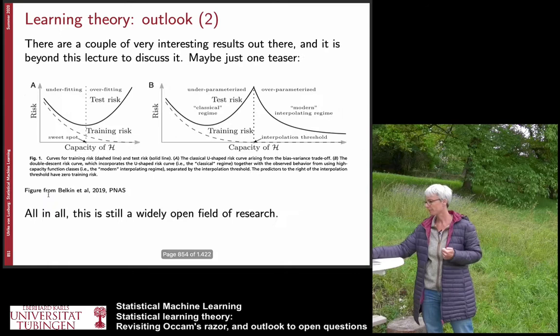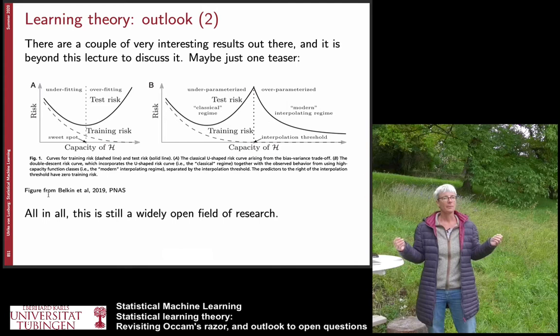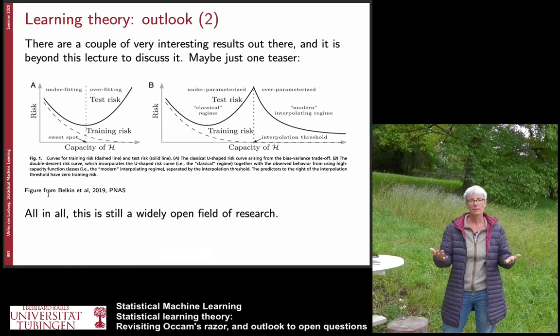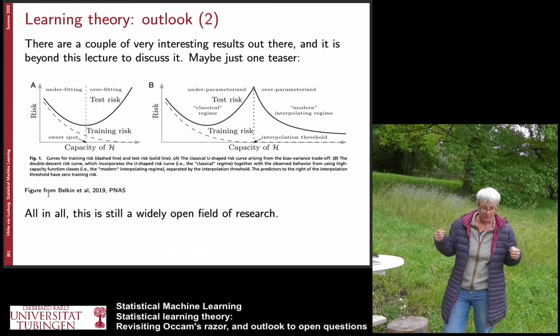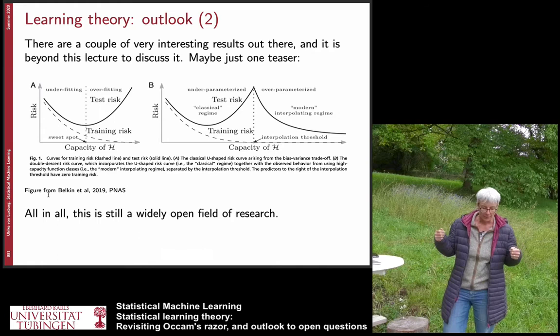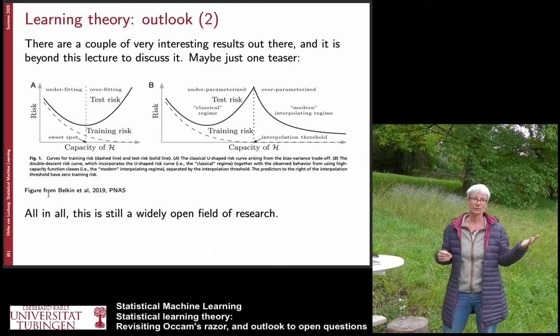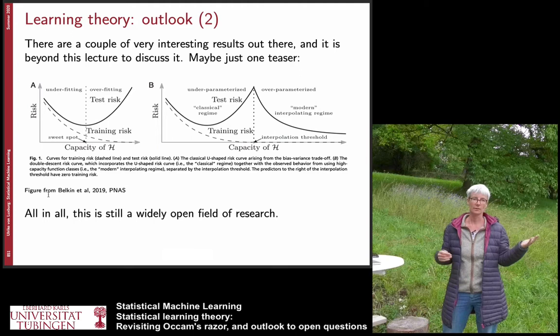So from a learning theory standpoint we're doing completely the wrong thing — overfitting on the training data — yet deep neural networks generalize very well in many cases. This does not mean standard learning theory is wrong; it just means the tools we have are not the right tools to explain why deep networks work. When you apply learning theory tools to deep networks, you get trivial bounds that never go to zero. However, this doesn't mean neural networks can't work — you just need a different toolbox. Since about five years ago, many researchers in learning theory are actively working on this widely open field.